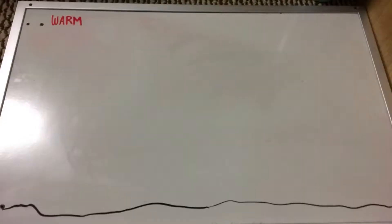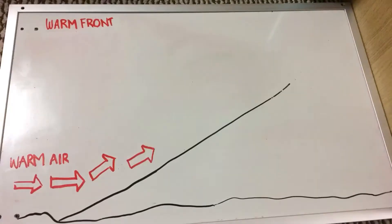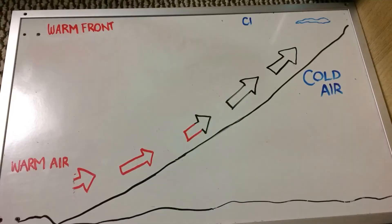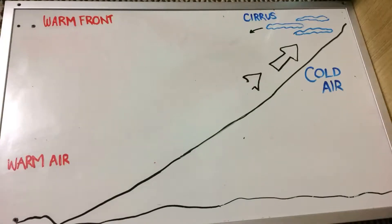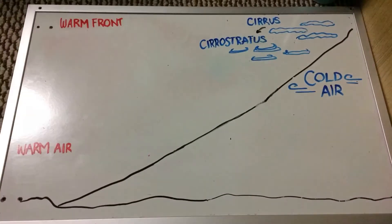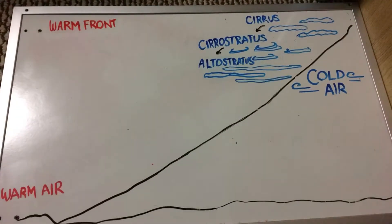How does the warm front work? First, the lighter, warmer air mass bumps into the cooler, heavier air mass. The warm air is forced off the ground by the colder, heavier air, and causes the warm air to go up over the cold air. You can think of it like a slope. For all you cloud watchers out there, you can find a warm front by its cirrus clouds, which appear 48 hours before the actual front appears. These clouds are made out of ice and will not make precipitation.